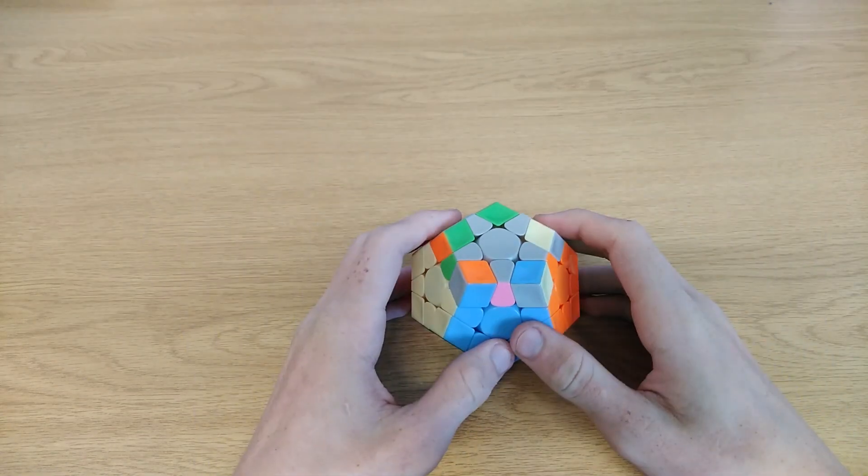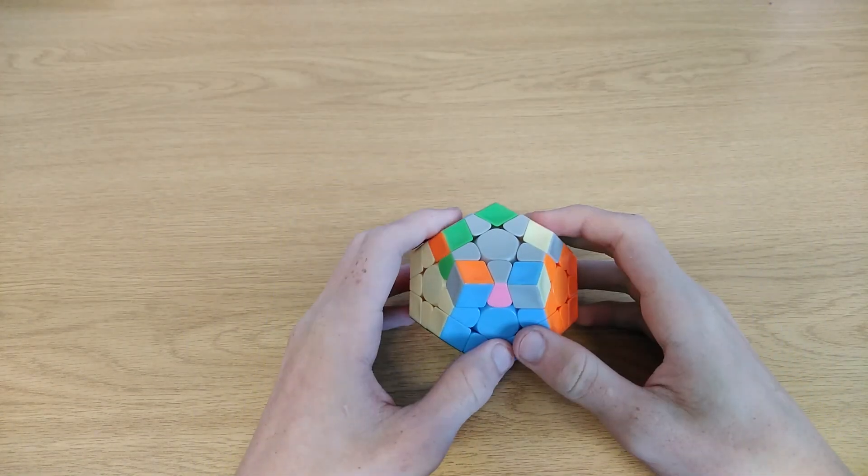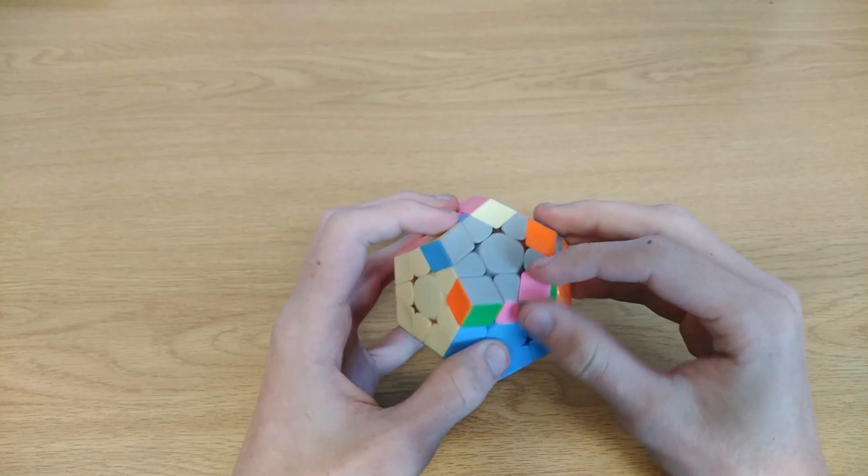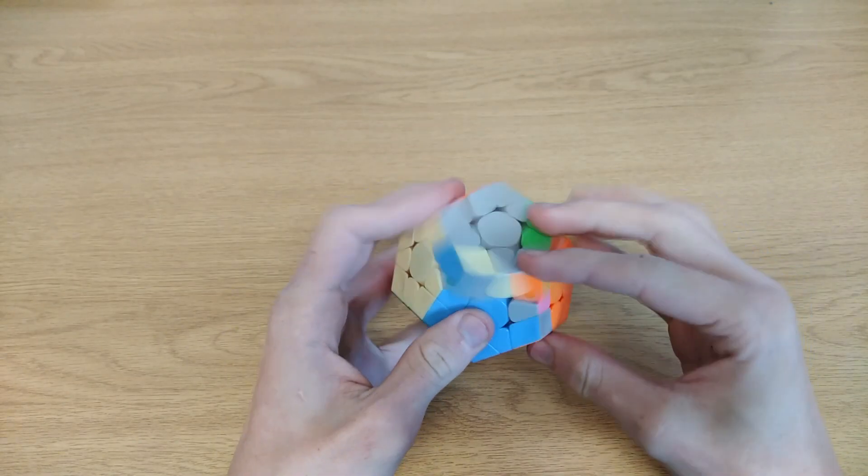There are only 19 algorithms in total and a lot of the algorithms you will know from 3x3. For instance, this is the Sune on the 3x3 and this is the back Sune on the 3x3.